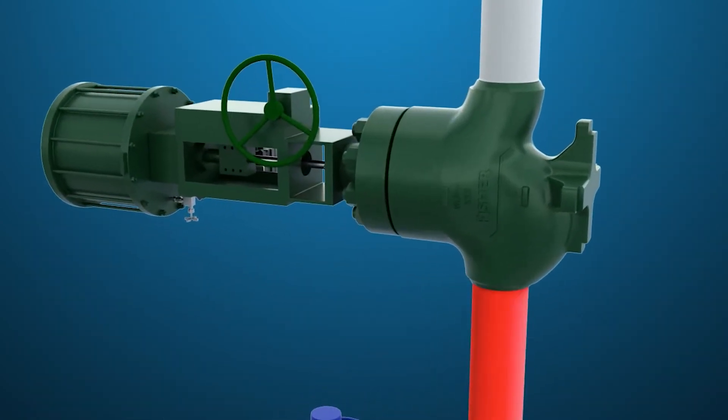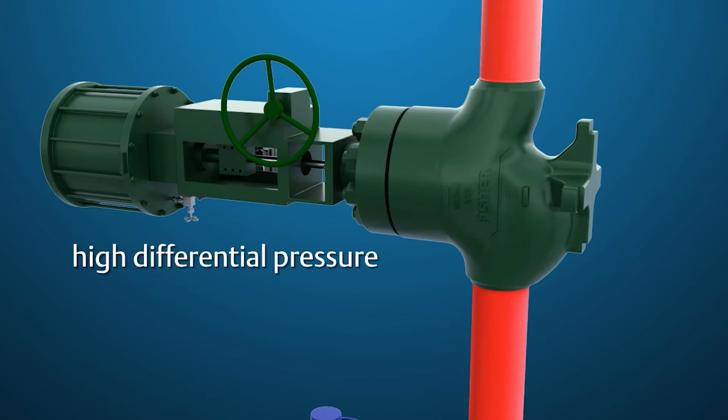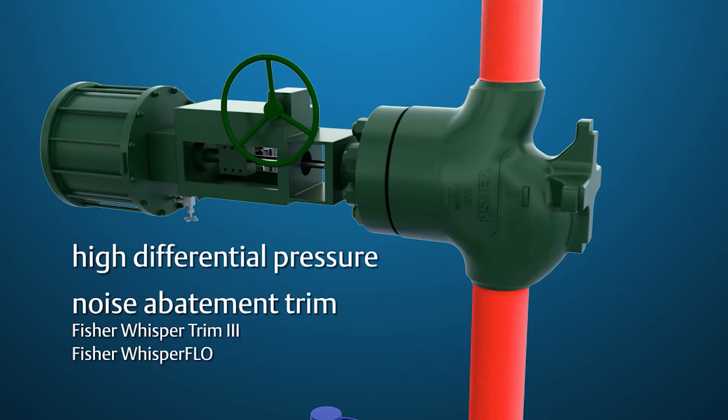When the sky vent system operates, it has a high differential pressure that creates very loud noise. A noise abatement trim, such as Whisper 3 or Whisper Flow, should be used in the control valve.